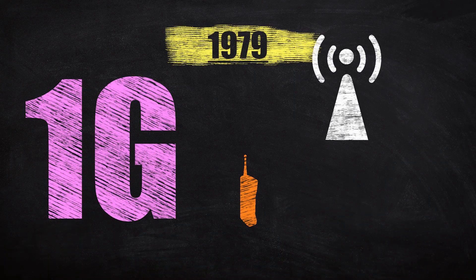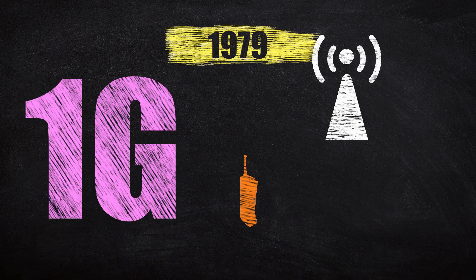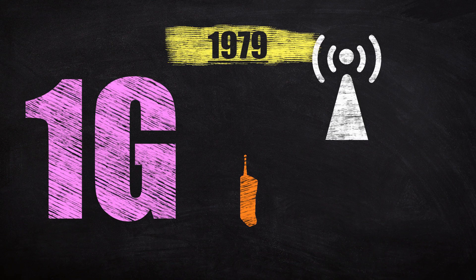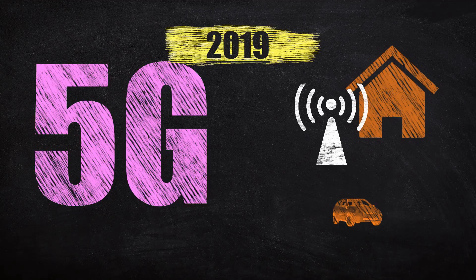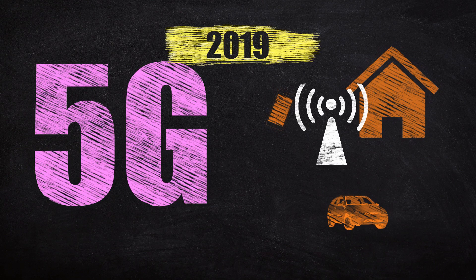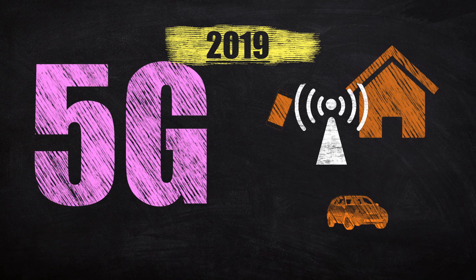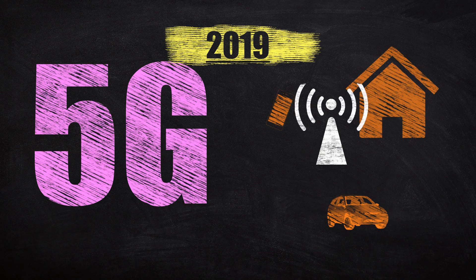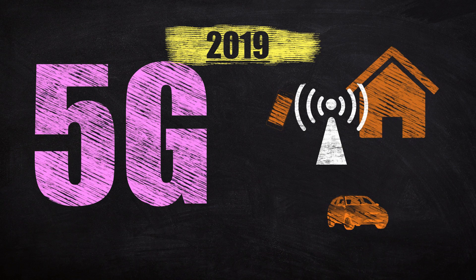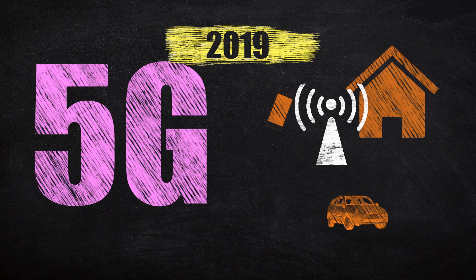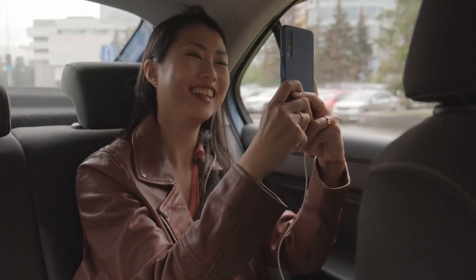It would take a few more decades before the first generation of the cellular network appeared in the late 1970s. Now half a century later we are witnessing the fifth generation of the network, which is poised to disrupt not just the mobile sector, but technology as a whole.